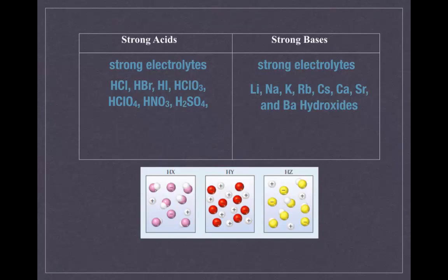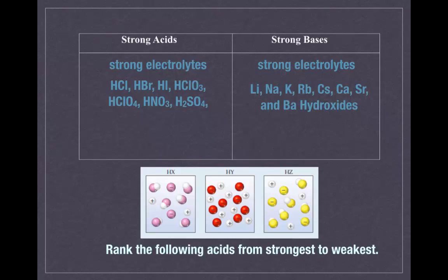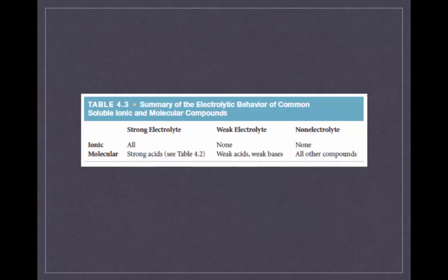I want you to look at the diagram provided — you have HX, HY, and HZ, which are all acids. Rank these acids from strongest to weakest based on what you see, just to make sure you have a clear understanding of what a strong acid is. This table summarizes the types of compounds that are strong electrolytes, weak electrolytes, and non-electrolytes. All ionic compounds are strong electrolytes, meaning they dissociate into their ions. The other strong electrolytes are your seven strong acids. Weak electrolytes involve your weak acids and weak bases. Non-electrolytes are molecular compounds like glucose that do not dissociate completely.